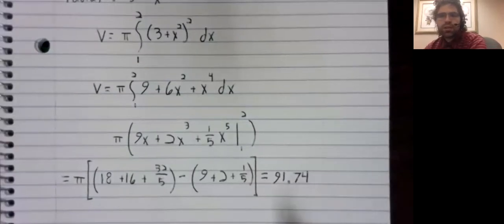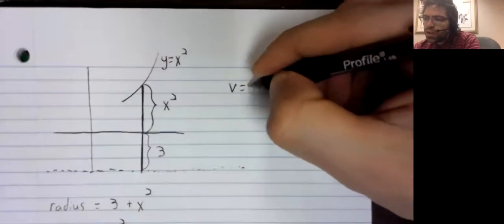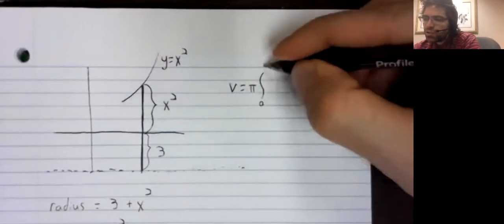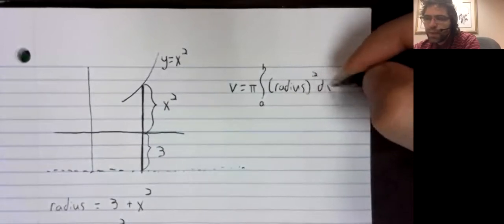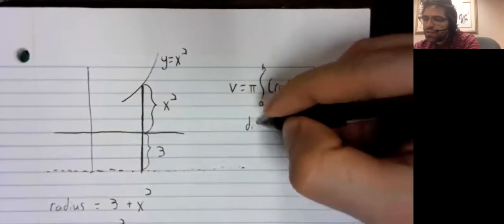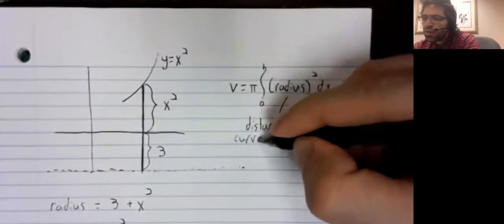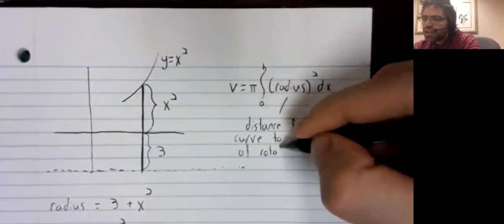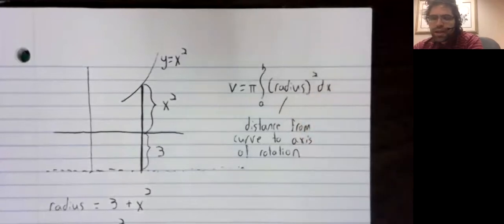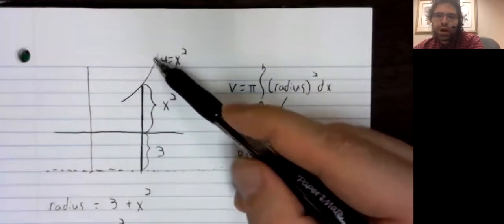So I'm ending this video by summarizing our method. The volume in general is pi times the integral of the radius squared. And the radius is the distance of the axis of rotation. And usually, if you want to find the radius, your first step should be to draw a picture.